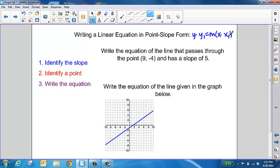In the first problem, it says write the equation of a line that passes through the point (9, -4) and has a slope of 5. So the first thing we're going to do is identify the slope, and it's given to us right here. This equation is going to have a slope of 5.